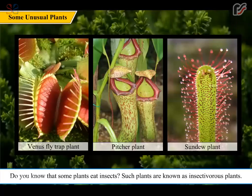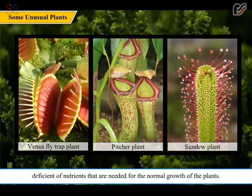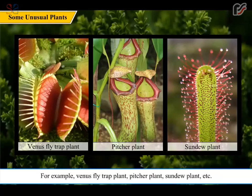Do you know that some plants eat insects? Such plants are known as insectivorous plants. They trap the insects and absorb the nutrients from their bodies. These are plants which live in soil deficient in nutrients needed for their normal growth. For example, Venus flytrap, pitcher plant, and sundew plant.